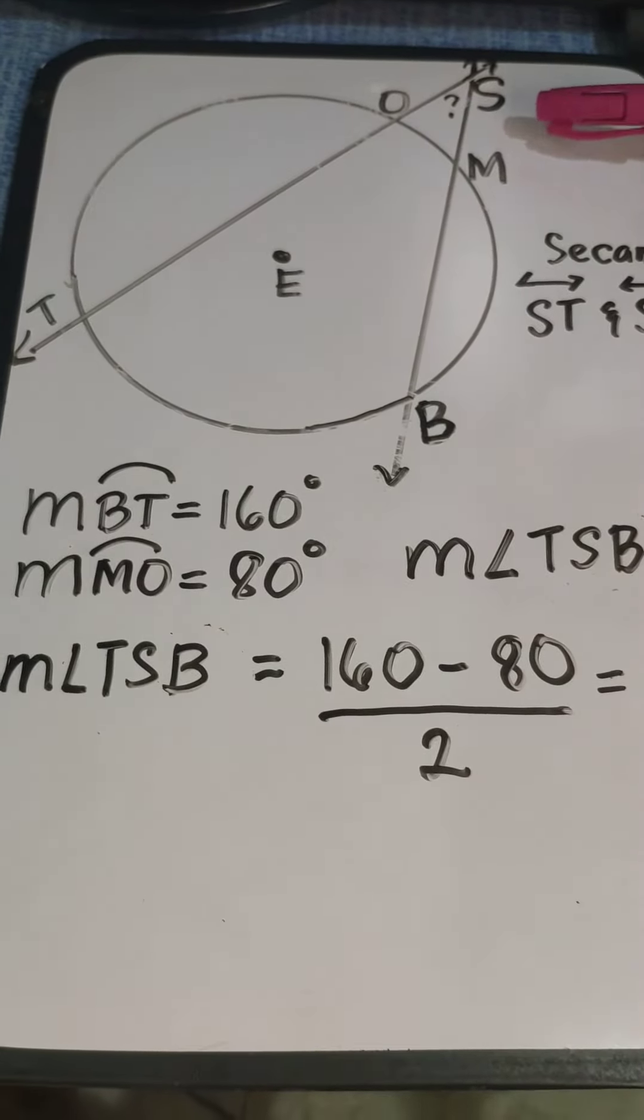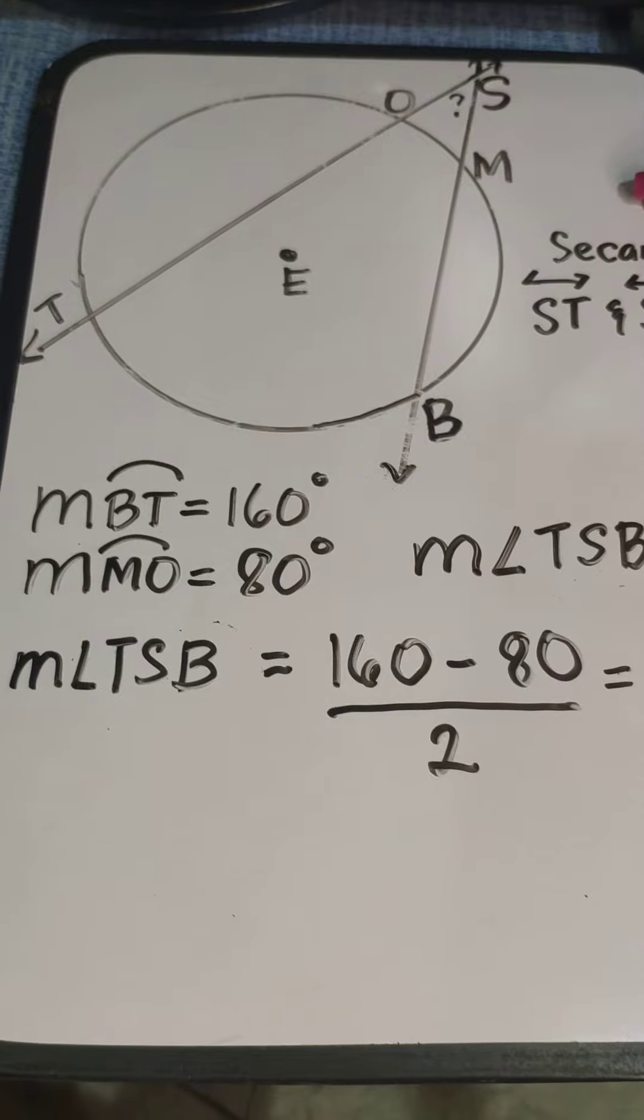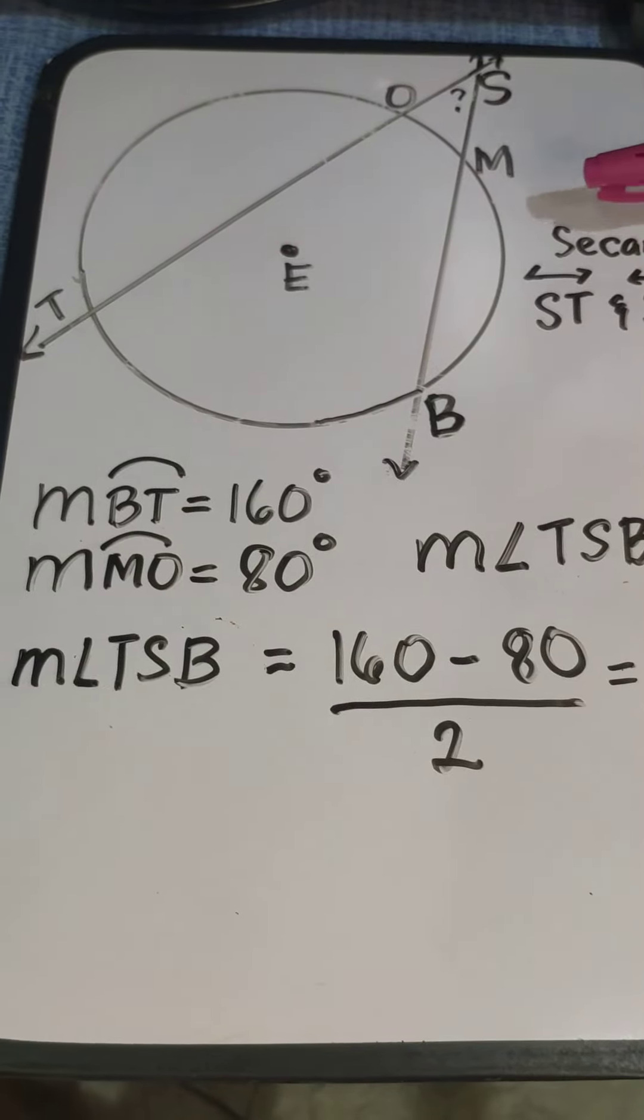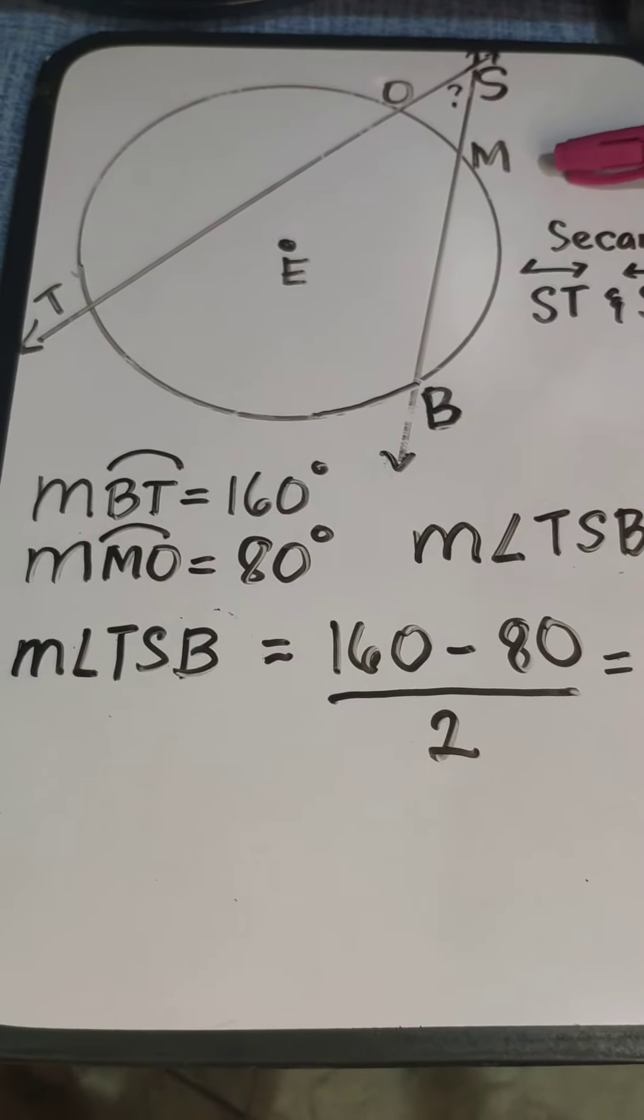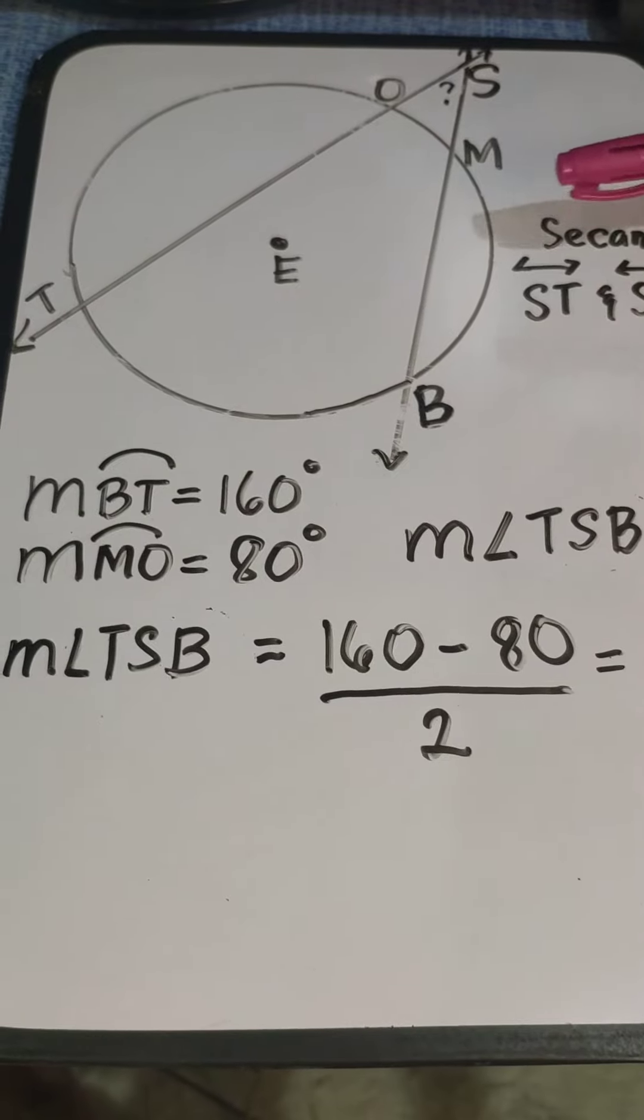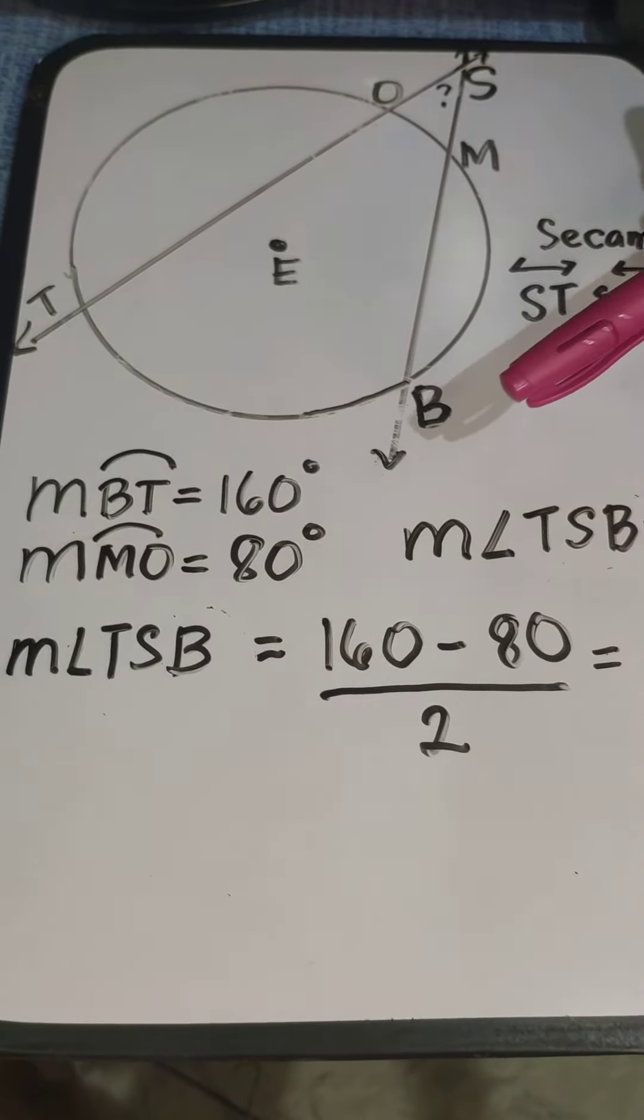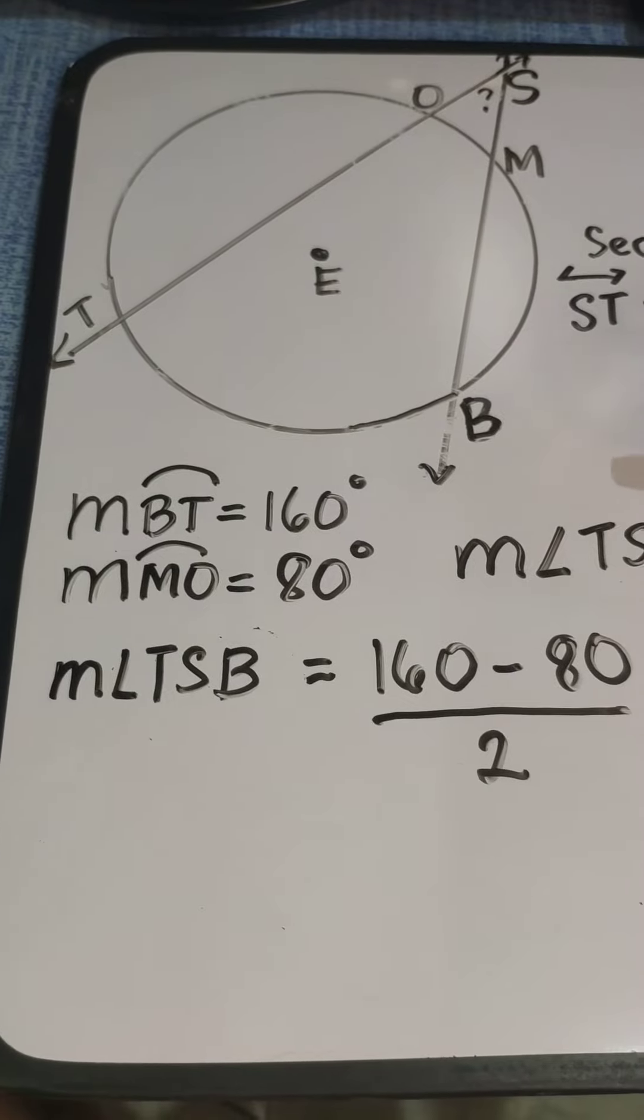The theorem states that if two secants intersect in the exterior of a circle, we should find the positive difference of the two intercepted arcs then divide by two.